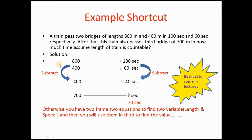From where does this shortcut come? I will explain it fully in the lecture. The next powerful shortcut is yet to come. What you would normally do is find the variables from these two equations — 800 meters in 100 seconds and 400 meters in 60 seconds — and then substitute into the third to find your answer.